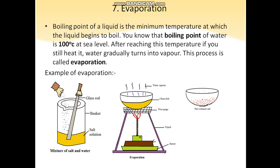After reaching 100 degrees Celsius, if we continue to heat the water, it turns into vapor. So to separate impurities from water, we boil it up to its boiling point and continue heating so that the water converts into water vapor and the impurities are left behind. The water vapors are then passed through a glass tube.